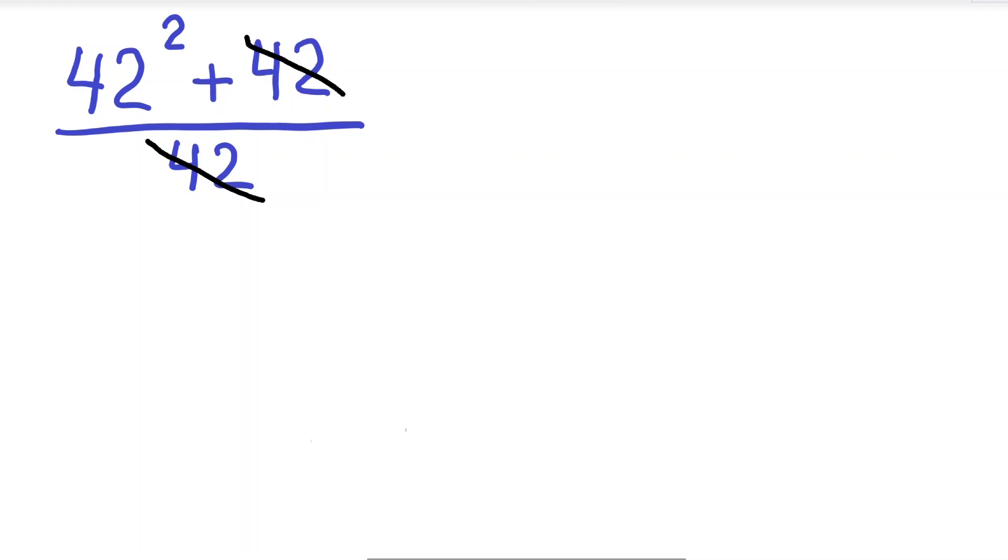Okay, so what should we do? Well, what we should do is factor out this top expression here. What do I mean by factoring out? I mean find a common factor between the two terms here—42 squared and 42—and pull it out of each number.